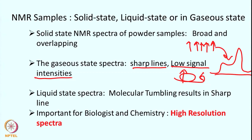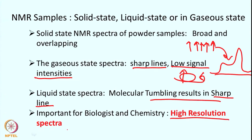The third case is liquid state samples. In liquid, the spins tumble very fast and because of that we have sharp lines. Unlike solid, the spins are not too closely spaced, so signal overlap is not significant. Therefore, liquid state samples give the high resolution spectrum, and for biologists and chemists this is very important because they can study the property of each spin. In this course we are mostly going to deal with liquid state spectra and how they are high resolution.